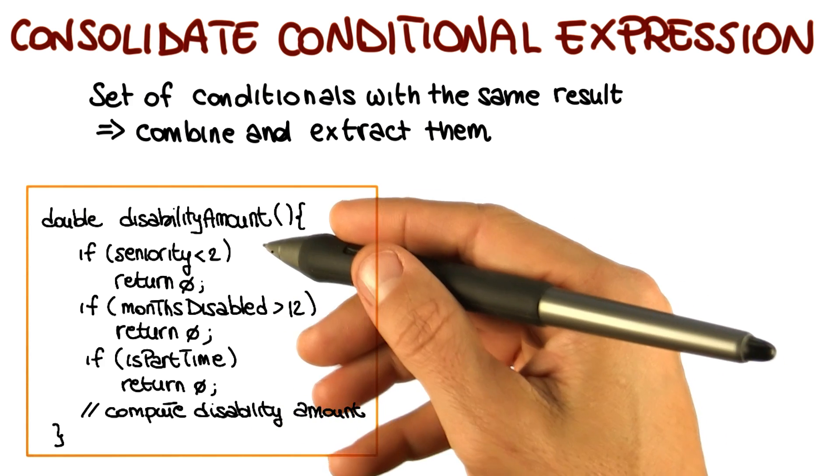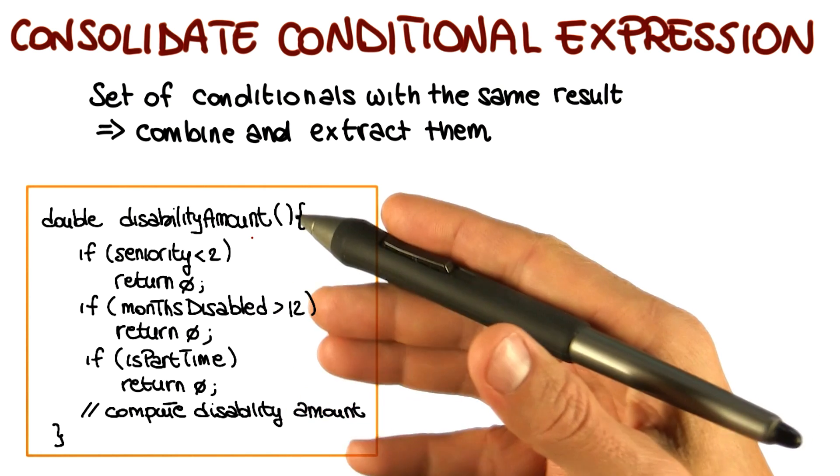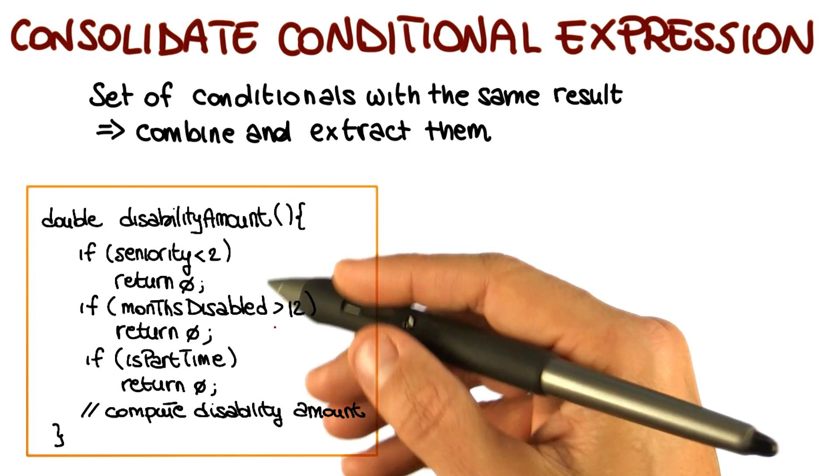There is a set of initial checks in the method whose goal is to decide whether the disability amount should be instead zero. And as you can see, there's multiple conditions.